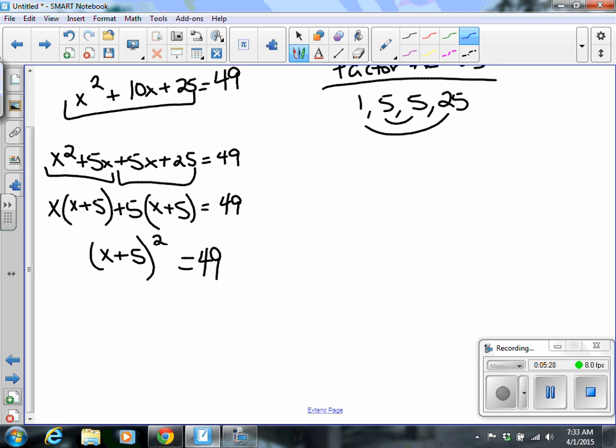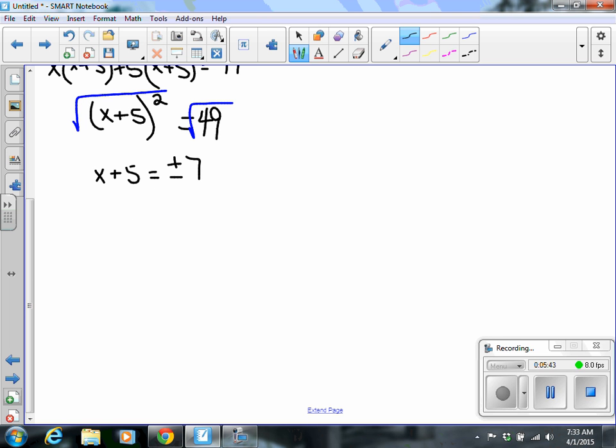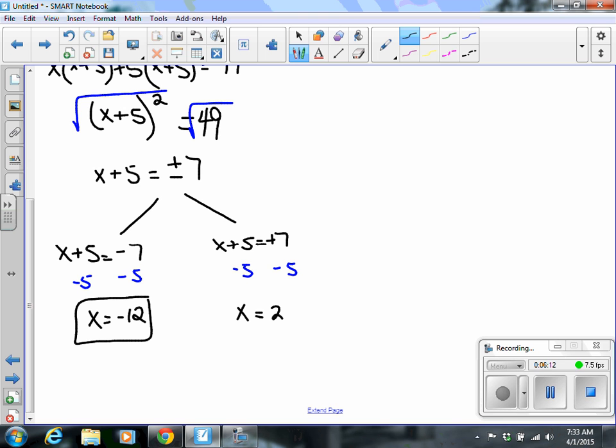Okay, the a out in front is a 1. So I can go ahead and jump to the square root. So I have x plus 5 equals plus or minus 7. Because I have that plus or minus there, I'm going to go ahead and split this into x plus 5 equals negative 7, and x plus 5 equals a positive 7. To get the x to stand alone, I'm going to subtract 5 from both sides of my equation. So on the left, I have x equals negative 12. On the right, I have x equals a positive 2.